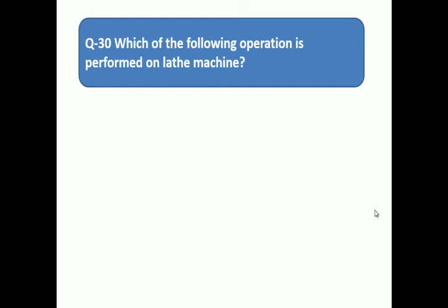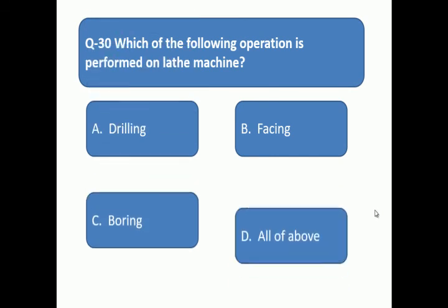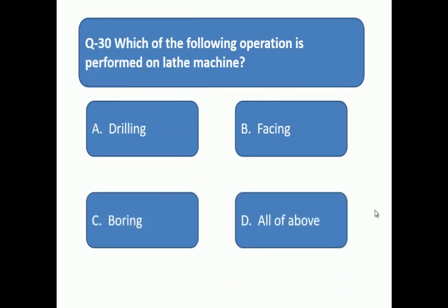Question 30: Which of the following operation is performed on lathe machine? Which operation is performed on lathe machine? A: drilling, B: facing, C: boring, D: all of above.